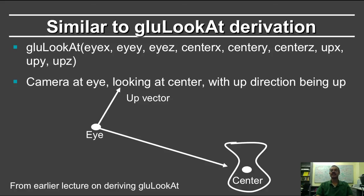So once again, the parameterization is very similar to GLU look at, and the diagram is exactly the same as in the earlier lecture on deriving GLU look at. You have an eye here, you're looking at some object here, and this is the up direction. So the steps we take are very similar to what we did in the derivation of GLU look at.